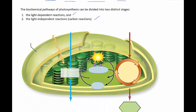The light reactions convert solar energy to chemical energy. The light-dependent reactions are actually the photo part of photosynthesis, because this is where light energy is actually captured through these reactions. Here's our chloroplast, and here is the sunlight energy.